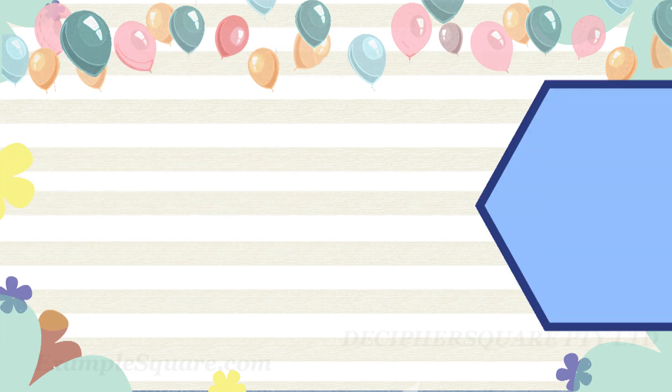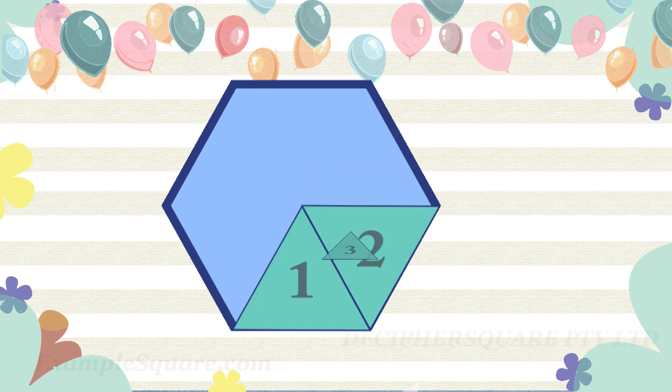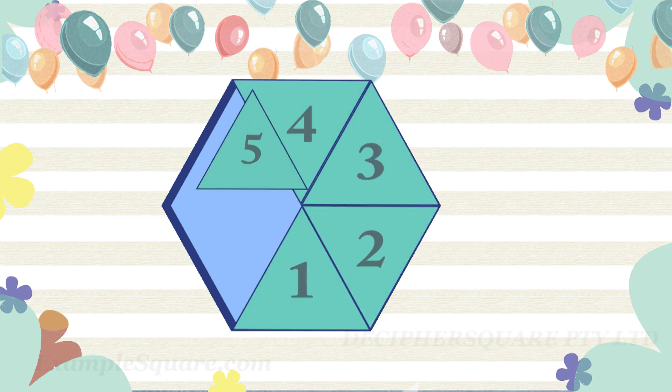A regular hexagon can be split into six equilateral triangles, all of the same size.